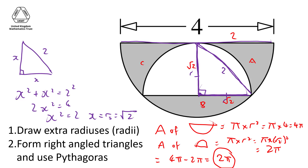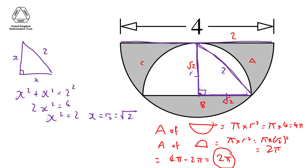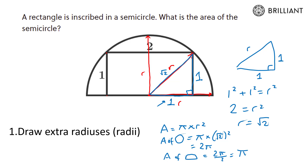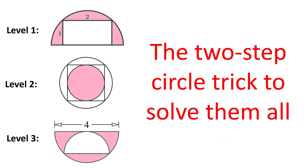Once again we used our tactic: draw extra radiuses, form right angle triangles, and use Pythagoras. Three completely different questions, all using the same two-step trick to solve them all. Thank you very much for watching — see you in the next video!